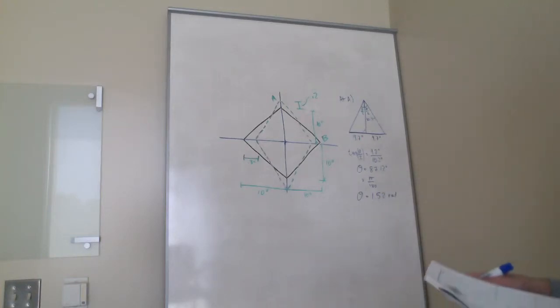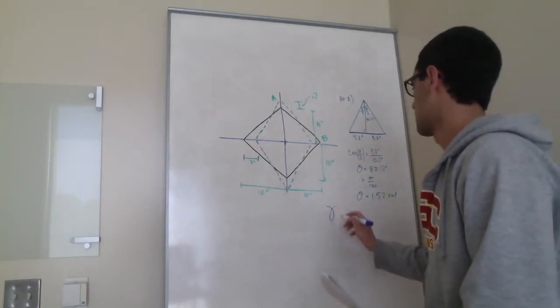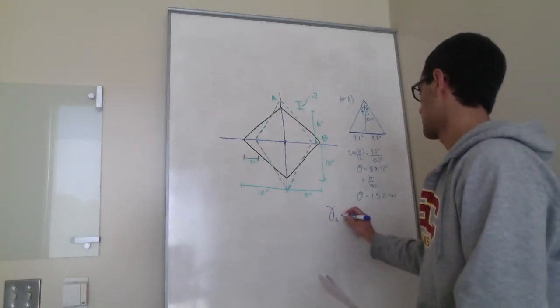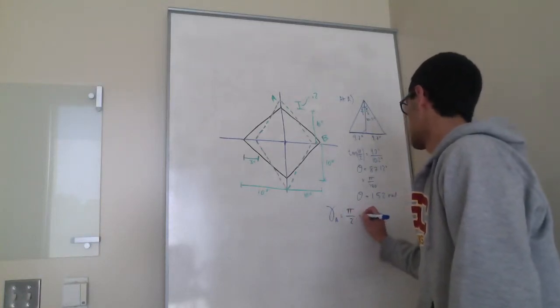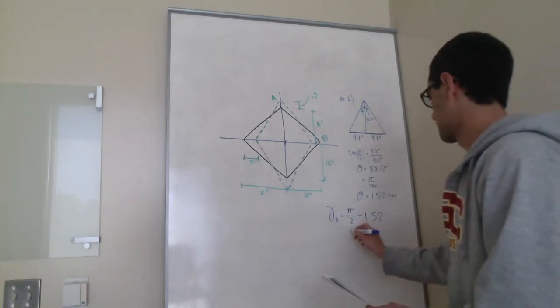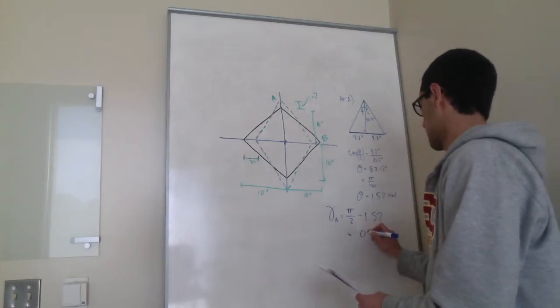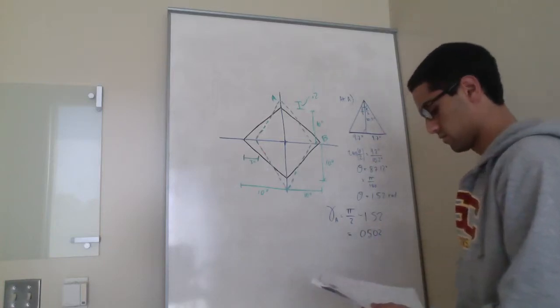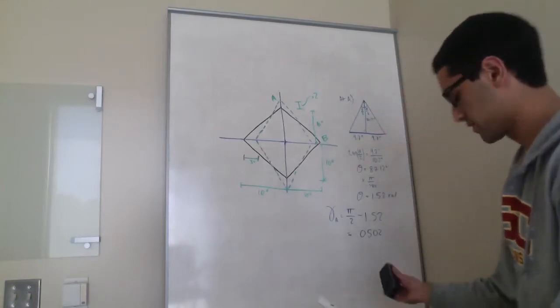Now, we need to use the shear strain equation. Gamma A equals pi over 2 minus our theta, 1.52 radians. We get 0.050 radians. That's our answer for A.